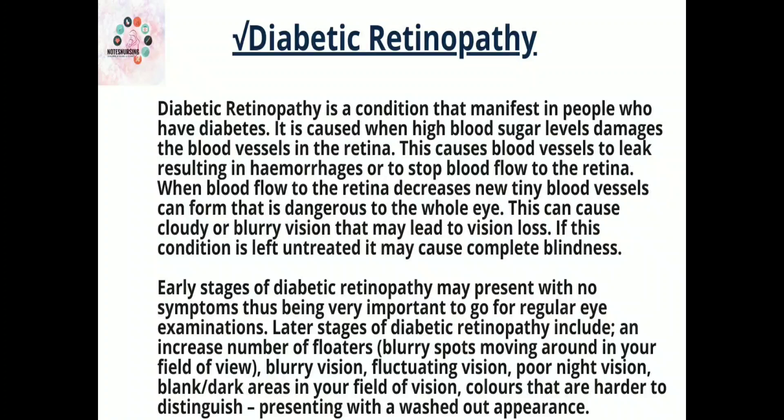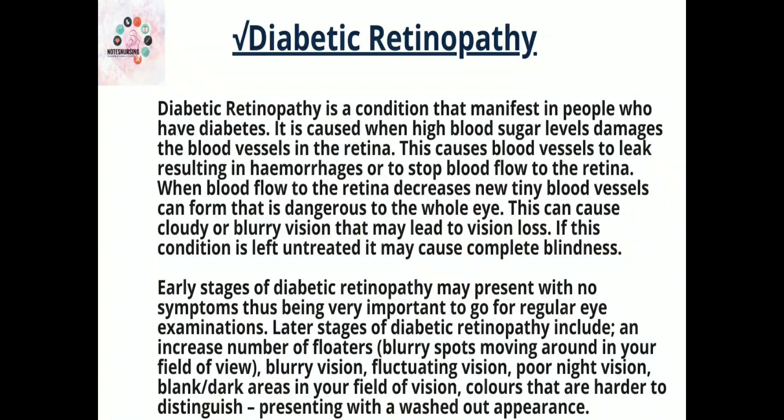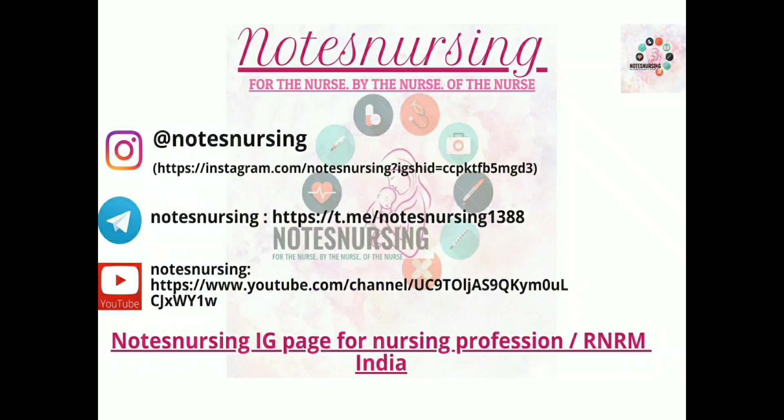Later stages of diabetic retinopathy include an increased number of floaters — blurry spots moving around in your field of view — blurry vision, fluctuating vision, poor night vision, blank or dark areas in your field of vision, and colors that are harder to distinguish, presenting with a washed-out appearance.